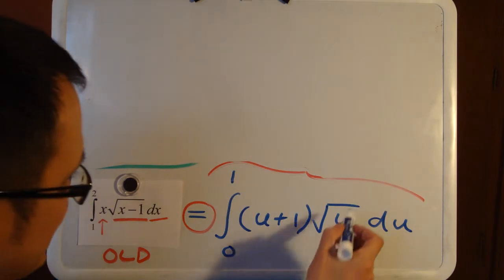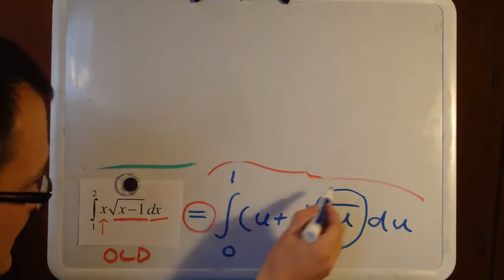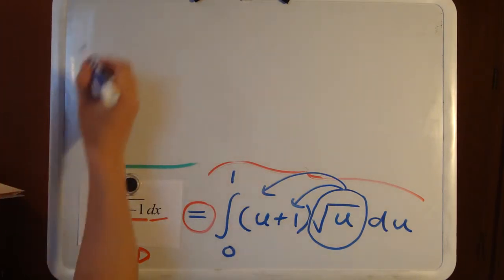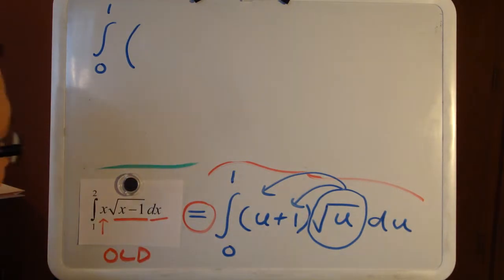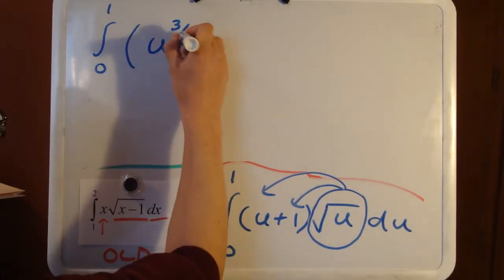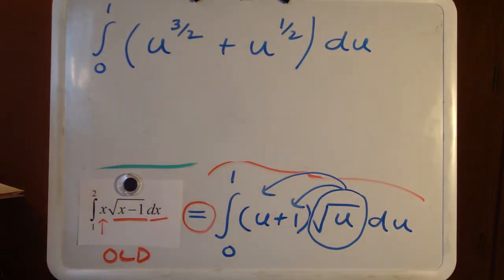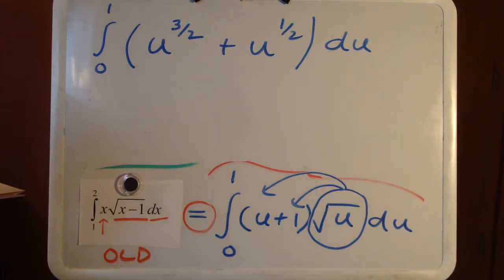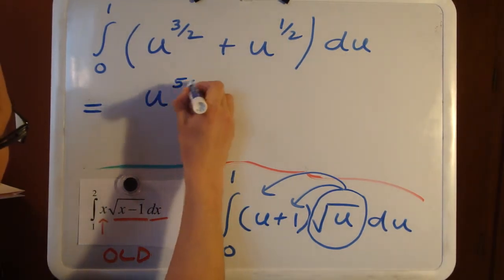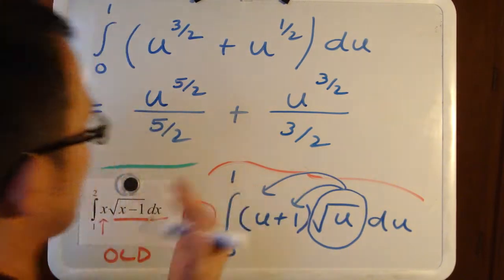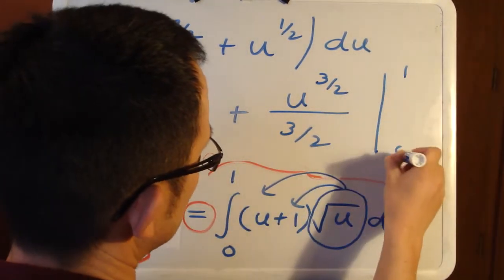To finish this one off: the square root of u is u to the one-half power. The easiest approach is to distribute u to the one-half first — algebraically expanding gives the integral from 0 to 1 of u to the three-halves plus u to the one-half du. Writing these as power forms lets you use the power rule twice: u to the five-halves over five-halves, plus u to the three-halves over three-halves, then apply the fundamental theorem of calculus with bounds 0 and 1.